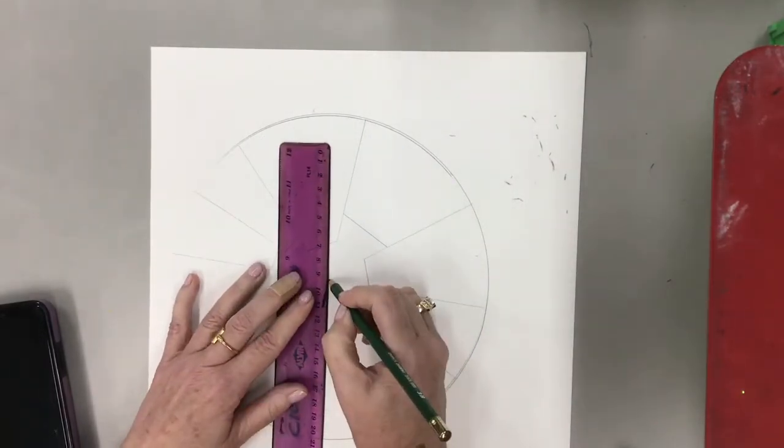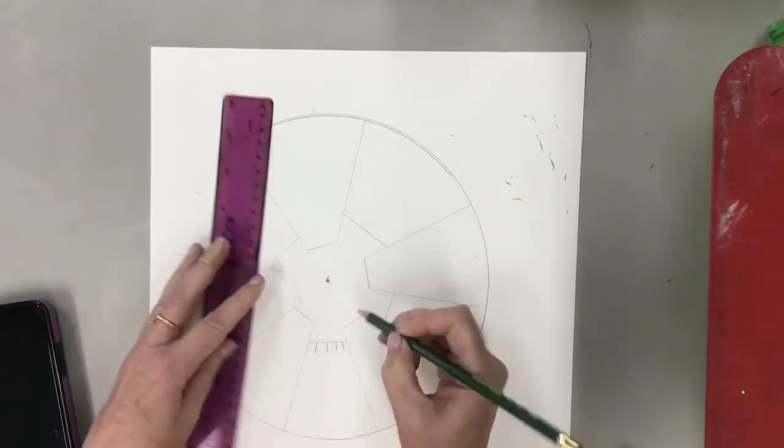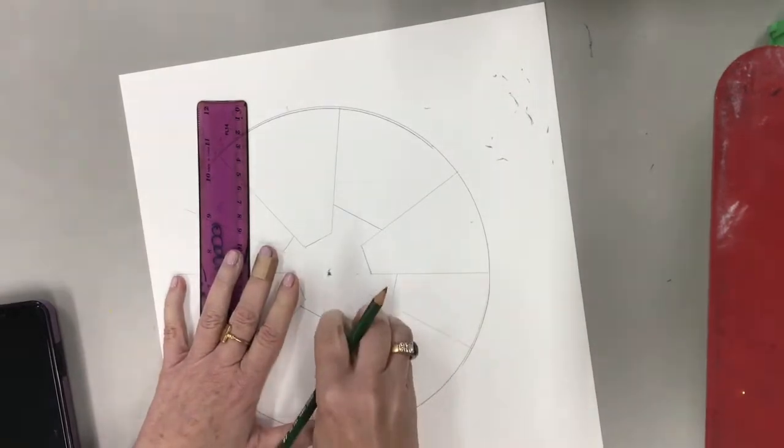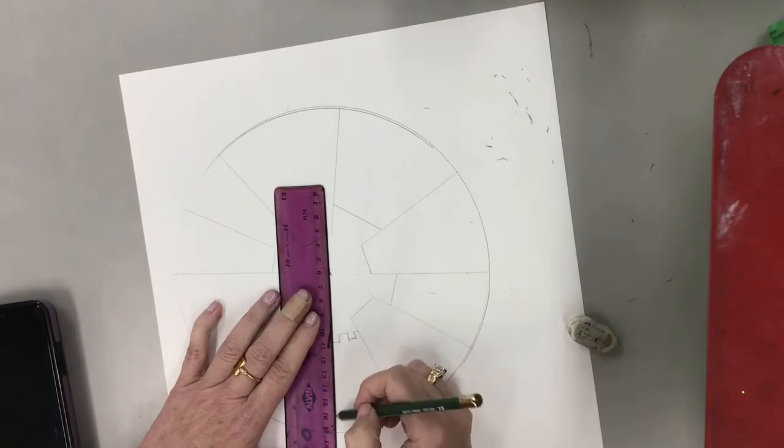Because anytime you draw a vertical line it has to line up with that vanishing point. That is what we call one-point perspective. Okay, so as things get closer to the center they're gonna be more narrow than they would be sort of at the edge of our circle.